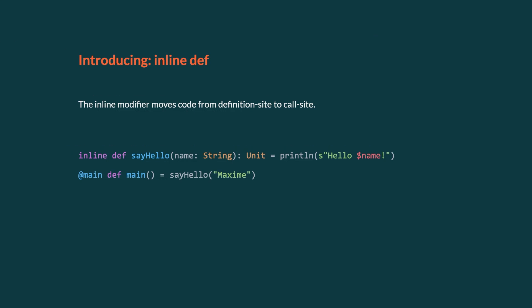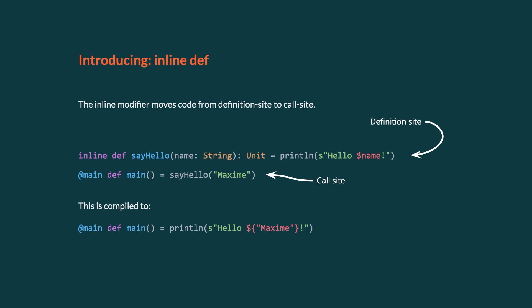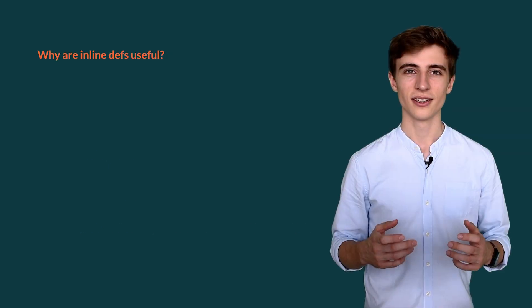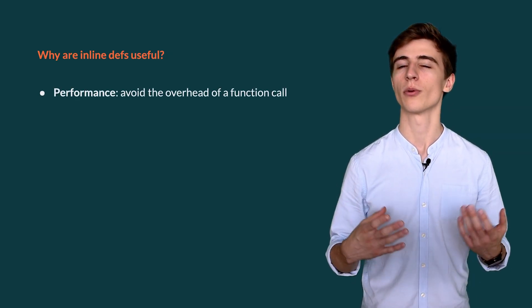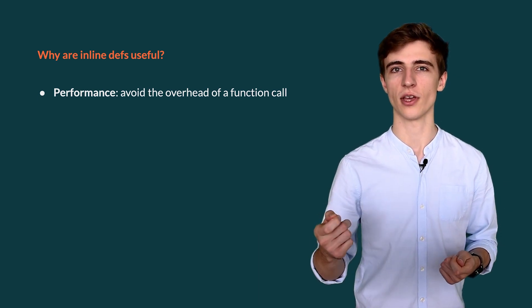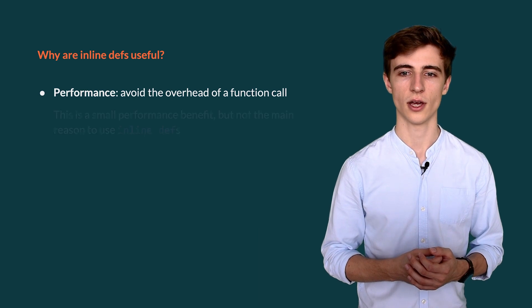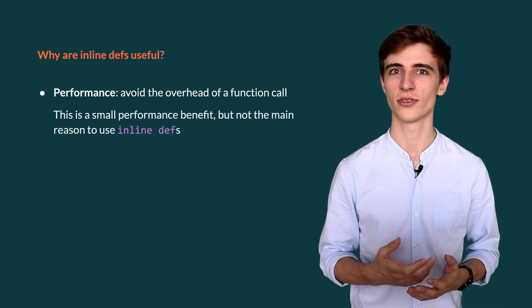All right, let's dive in. The inline modifier can be used before the keyword def to mean that we want to move an implementation from the definition sites to the call sites. Here we have a small example in which we greet somebody. The definition site is the def sayHello — this is where we define the implementation of how to say hello — and the call site is the main method, where we call the sayHello method. This is compiled to just a single line where we take the implementation and inline it into the main method. You might say one use is for performance — we avoid the overhead of calling the sayHello function — which is a tiny performance benefit, but this is such a small performance win that it's not really the main use of inline defs.